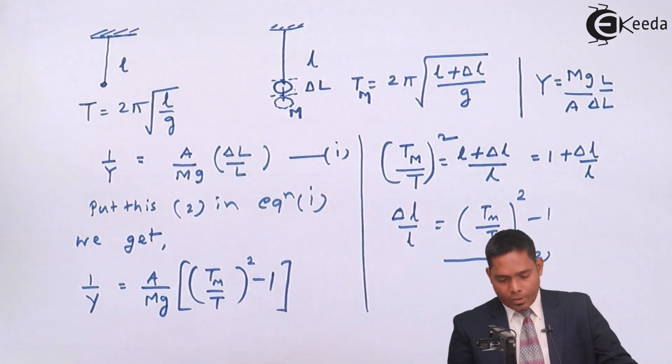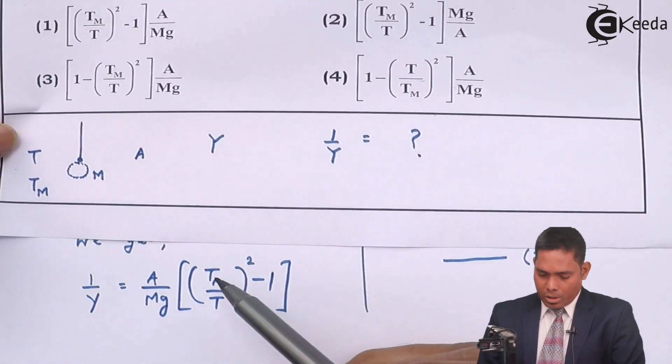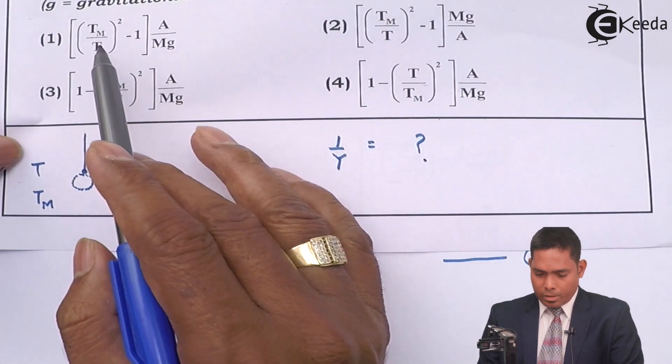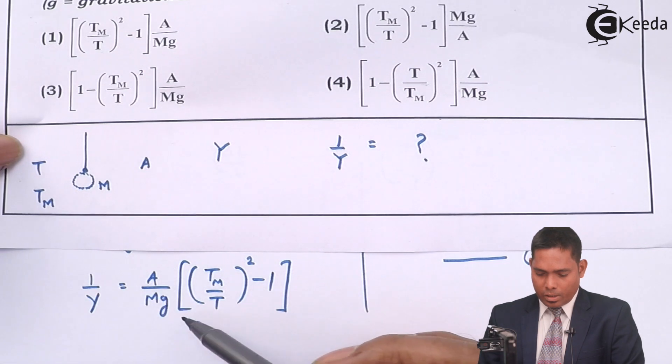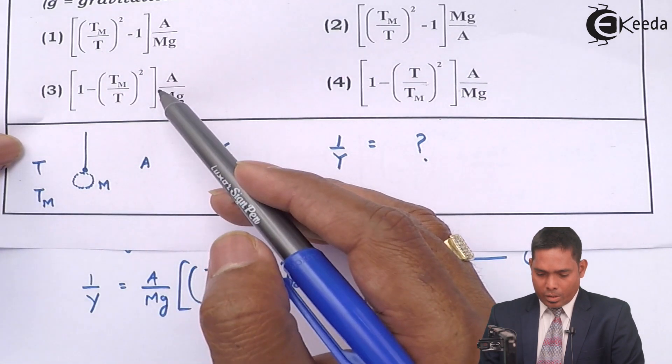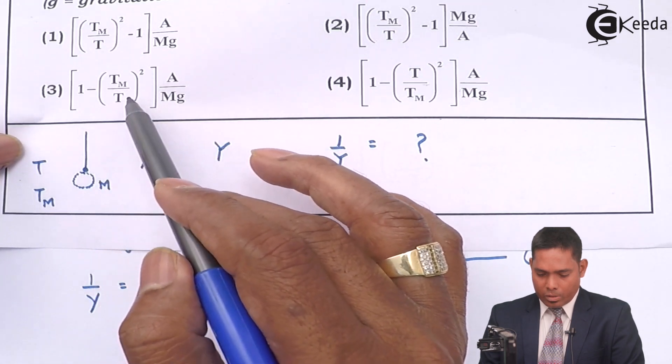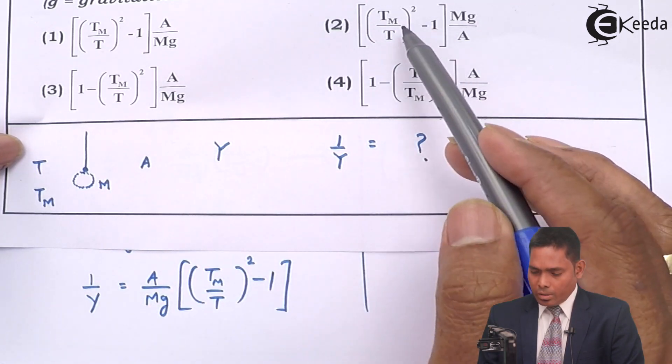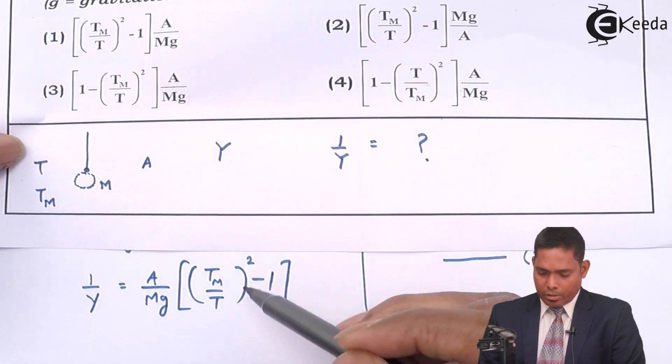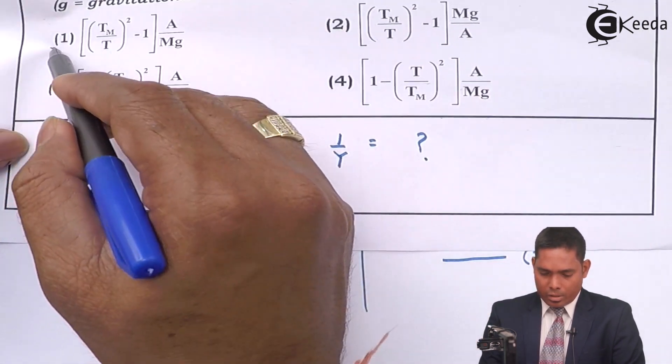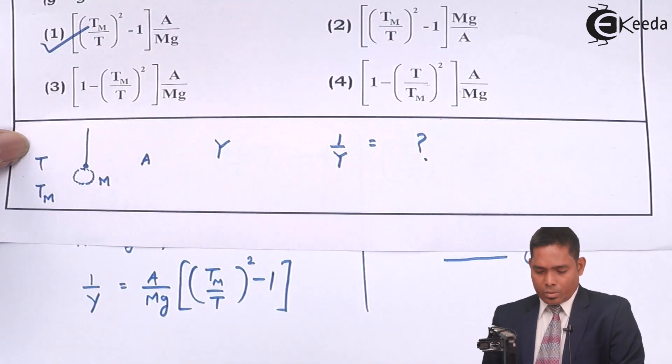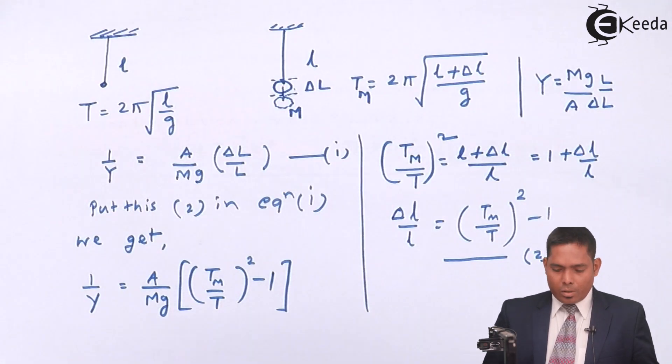And if I see the options, Tm upon T whole square minus one is there. A upon Mg is also there. Here and here. The difference is here this minus is not there, it's not possible. This is not there. So option one is the correct answer. You can see here, this is same as this. So the answer is one. Thank you.